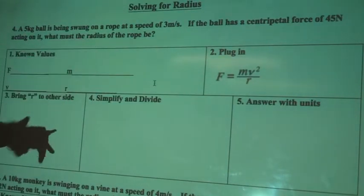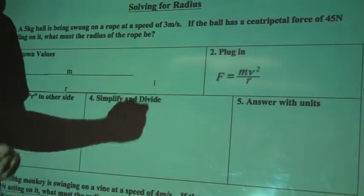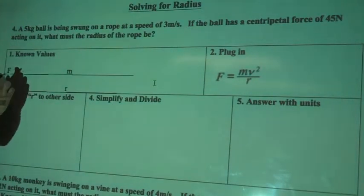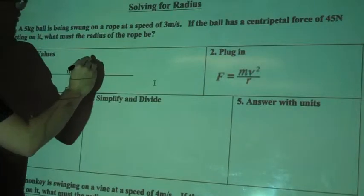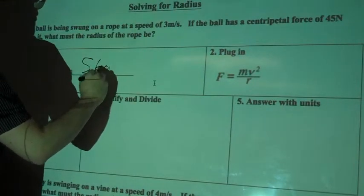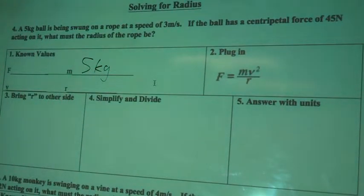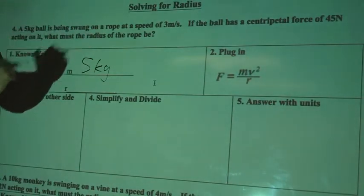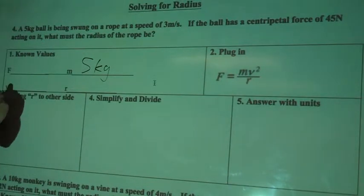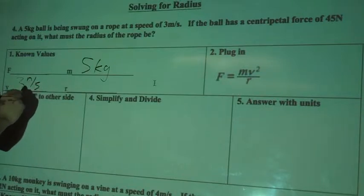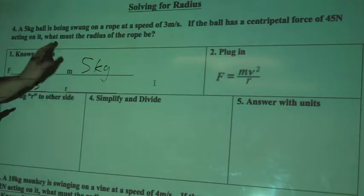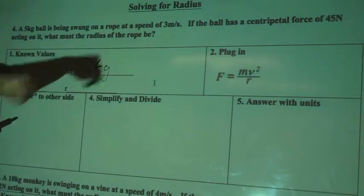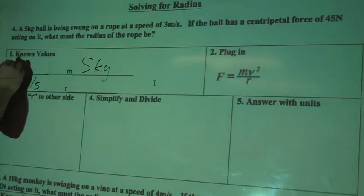So let's plug in our known values. 5 kilogram ball, that's my mass. Swung on a rope at a speed of 3 meters per second, so velocity is 3 meters per second. My radius I don't know, we're finding the radius of the rope. But I do know the force this time, it's 45 newtons.